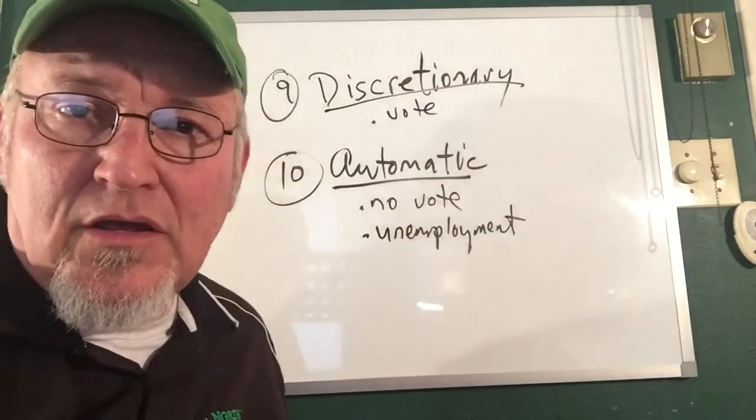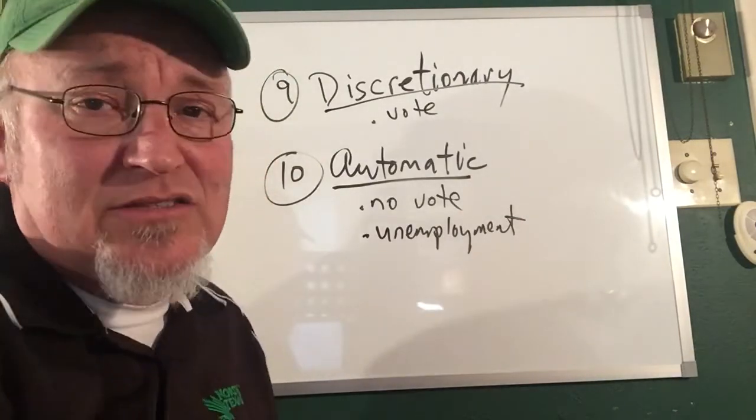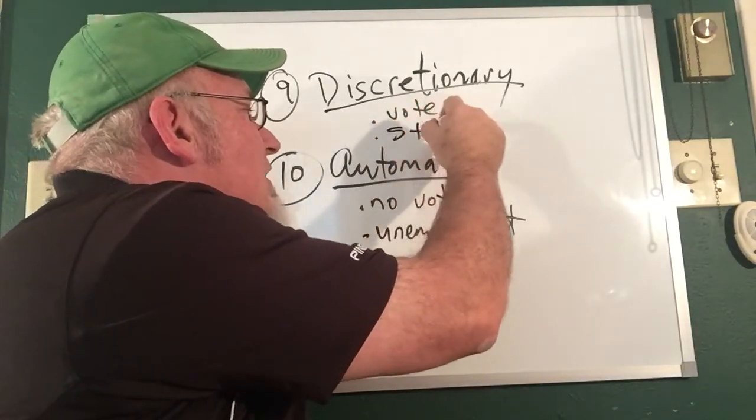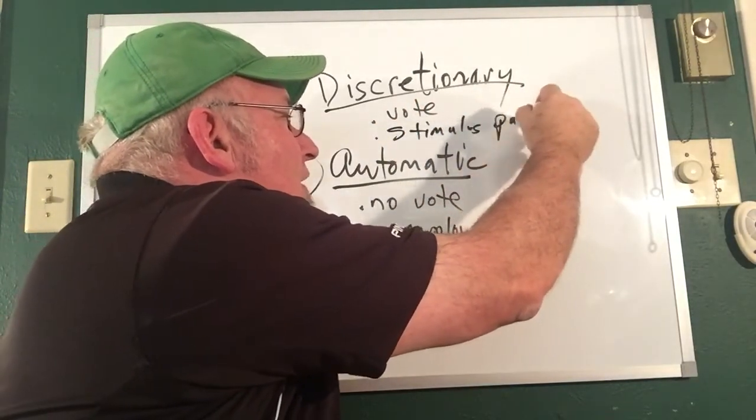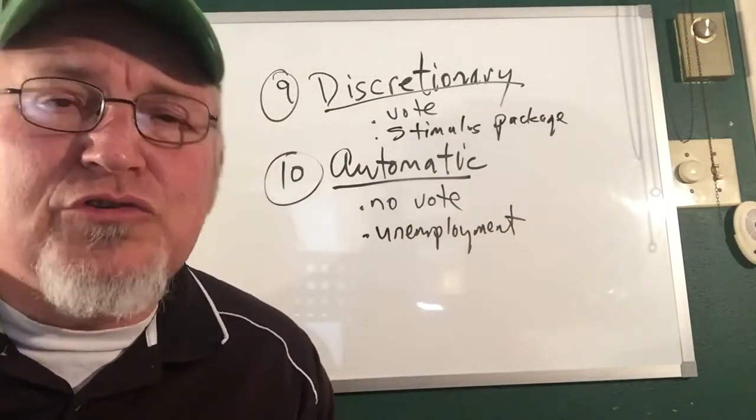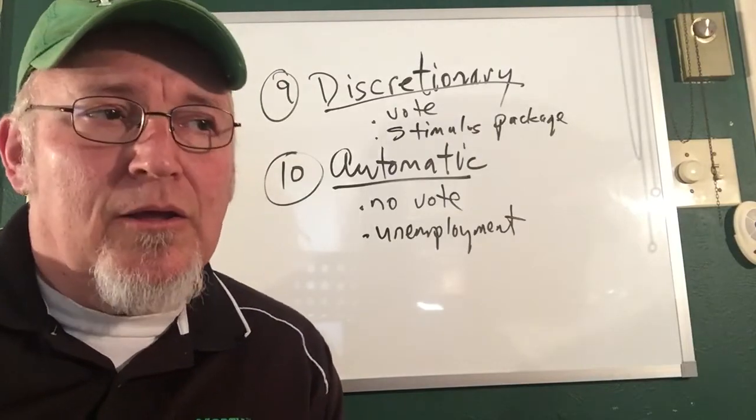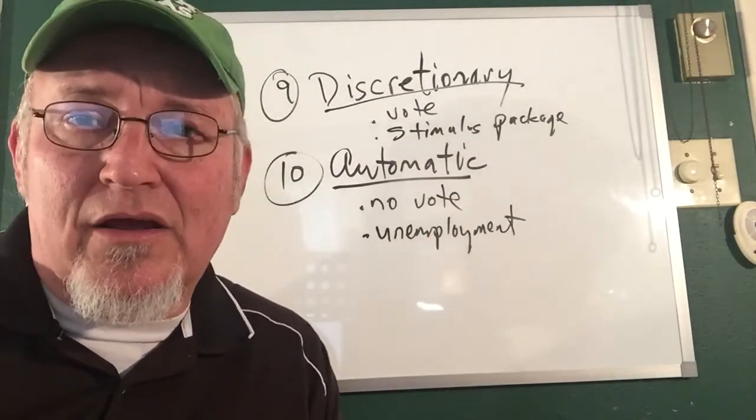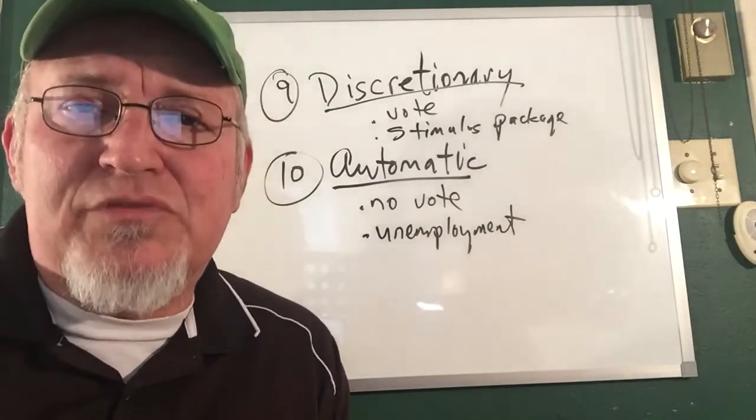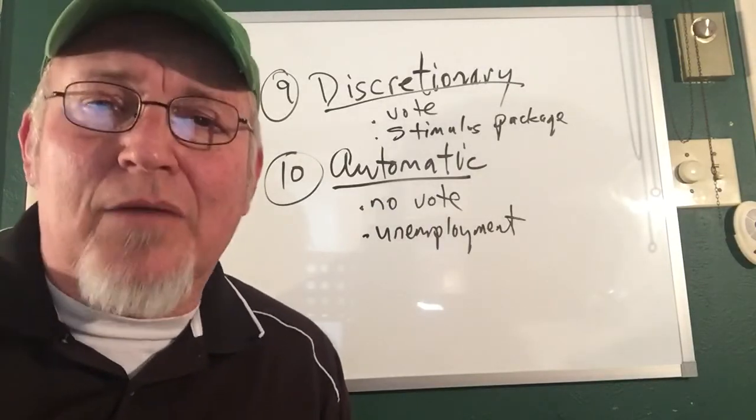Discretionary requires a vote by Congress, and the best example recently I can think of is the stimulus package. Congress just voted on about a two trillion dollar stimulus package, and that is a great example of discretionary spending. So those are the top 10 kind of terms or concepts you need to have down as we talk about fiscal policy.